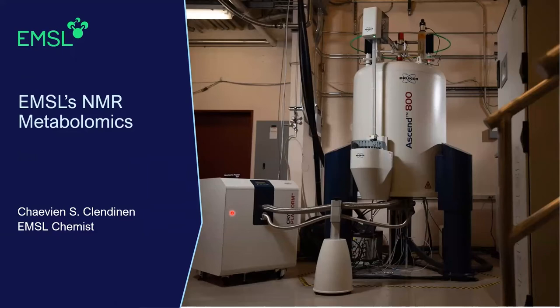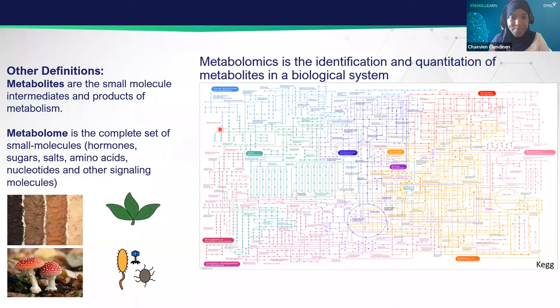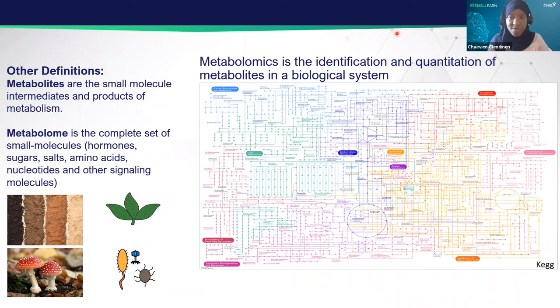Hi, everyone. My name is Che Vien Kalendinen, and I'm a chemist here at EMSL. I'm going to be talking about EMSL's NMR metabolomics capability. Metabolomics is the identification and quantitation of metabolites in biological systems. Metabolites are small molecules — the products of metabolism — and the metabolome is the complete set of these small molecules. The biological systems we can study include, but are not limited to, soil, plants, different fungi and bacteria, and water systems.